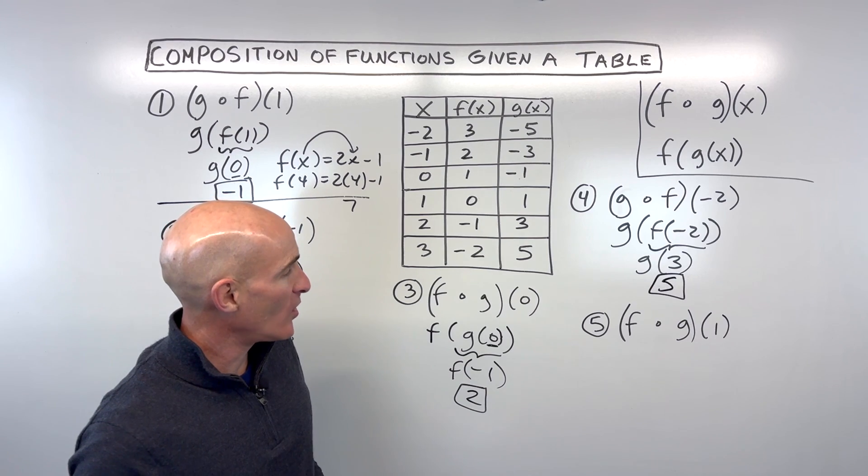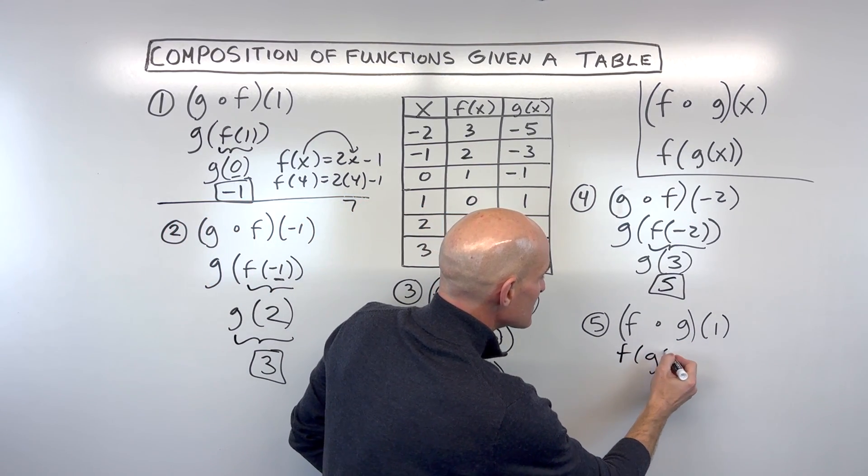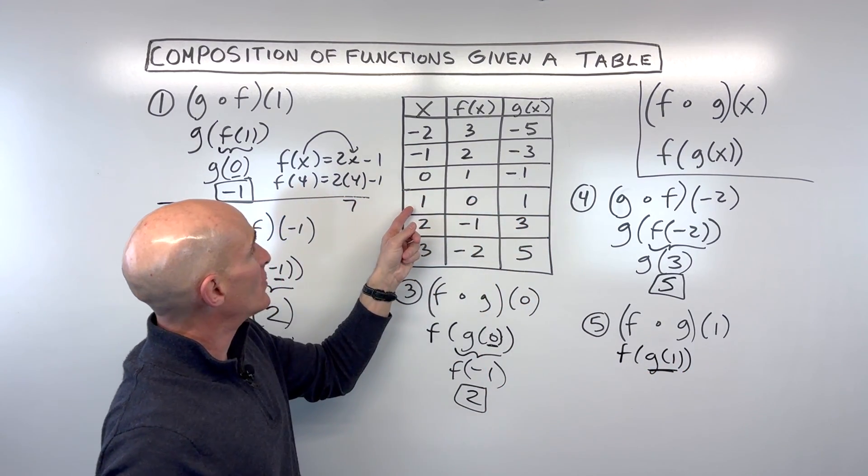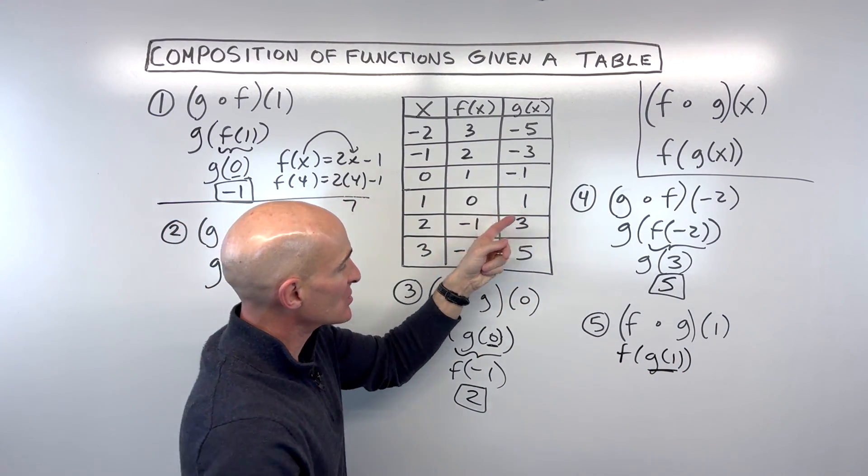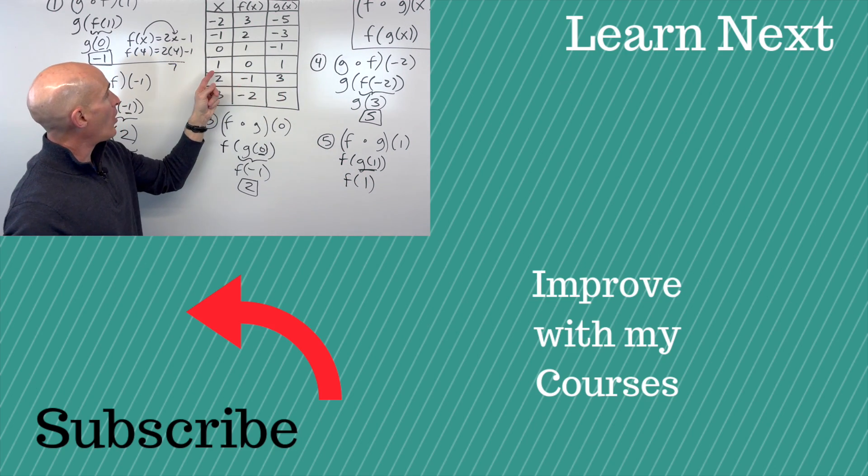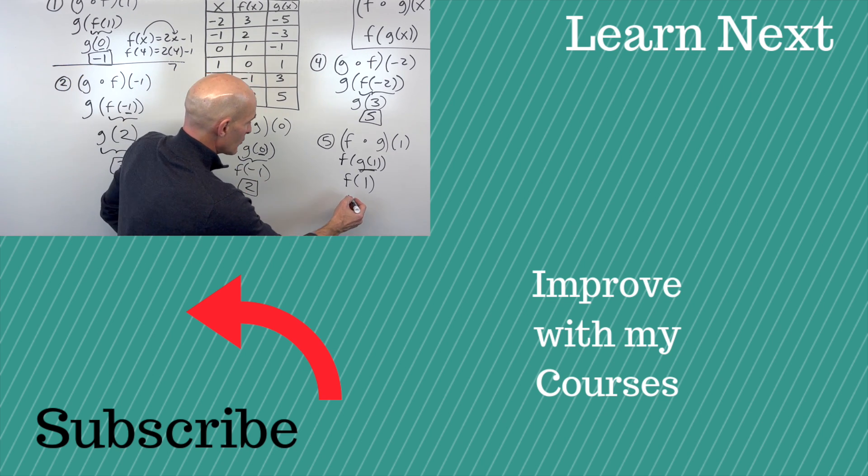Last example—see if you can do this one: f of g of one. Again, I like to rewrite it as f of g of one. We're putting one into our g function. So when x is one, the output for g is one. Now we go to our f function and put in one. So when x is one, the output or y value is zero. And we solved it.